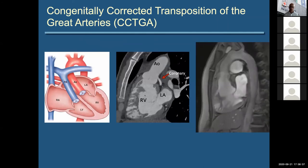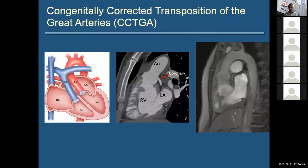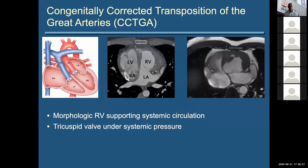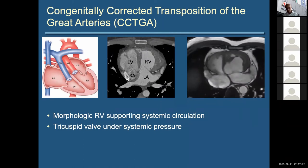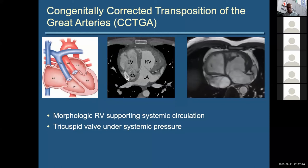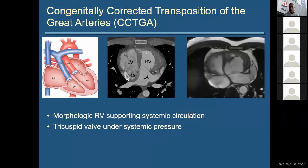Here's what CCTGA looks like: the left atrium connects to a morphologic right ventricle — there are ways you can tell it's a morphologic right ventricle — ejecting out into the aorta. On CT or MRI, you can work out the whole anatomy. The left atrial appendage shape tells you this is a left atrium; a smooth superior septal surface tells you this is a left ventricle. The heart is often in a funny position — in this case immediately behind the sternum, which often leads to terrible image quality on echocardiography.